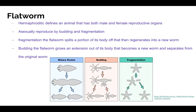Flatworms asexually reproduce by budding and fragmentation, also known as cloning. During fragmentation, the flatworm splits a portion of its body off, which then regenerates into a new worm. Similarly, during budding, the flatworm grows an extension out of its body that becomes a new worm and separates from the original worm.